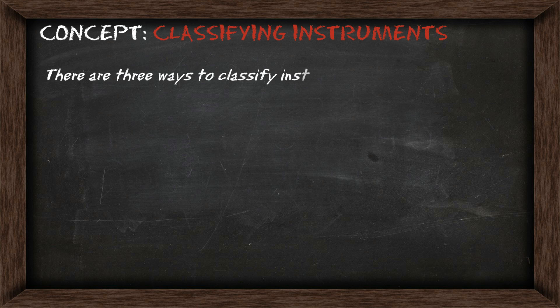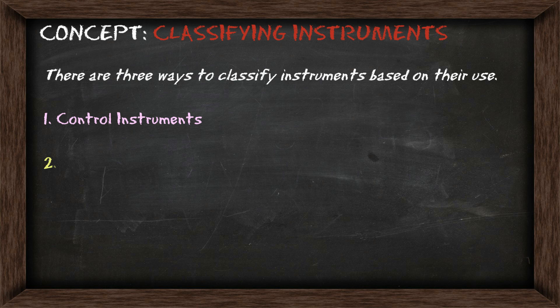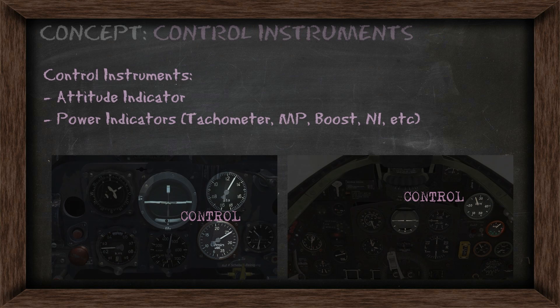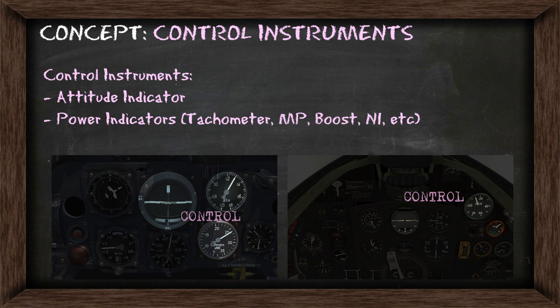There are three ways you can classify your instruments based on their use. You have control instruments, performance instruments, and navigation instruments. Your control instruments include things like your attitude indicator and the power indicators such as your tachometer or boost. Here I've included a couple of pictures to show these instruments.